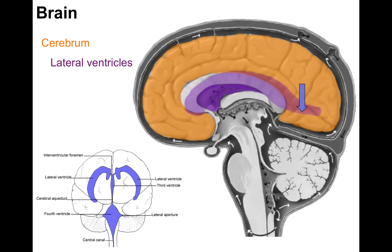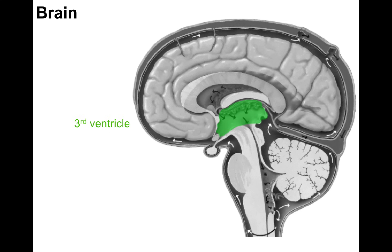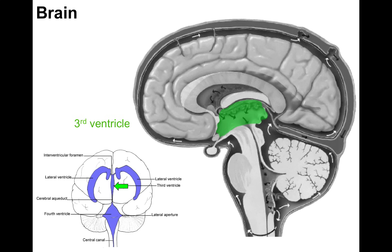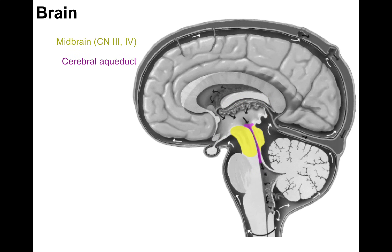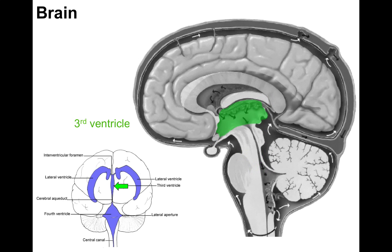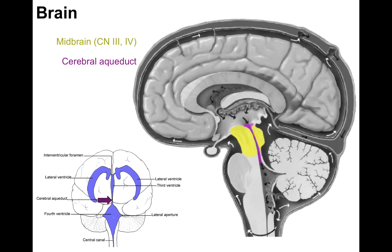In an anterior view, the two lateral ventricles are clearly paired. The third ventricle is located between the diencephalon — the thalamus and hypothalamus — on the right and left sides; it's unpaired and sits in the midline. It communicates above with the two lateral ventricles and below with the cerebral aqueduct, which courses through the midbrain. The midbrain houses the nuclei of cranial nerves III and IV.